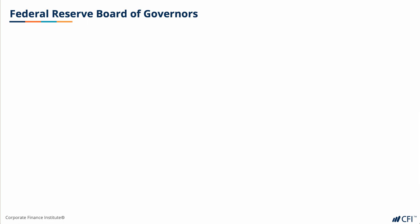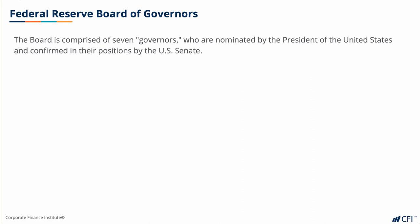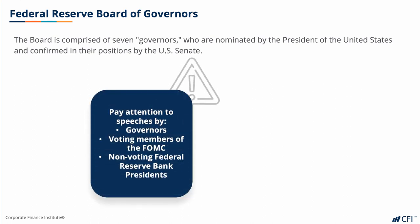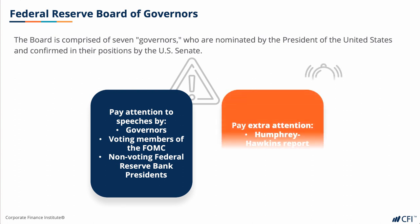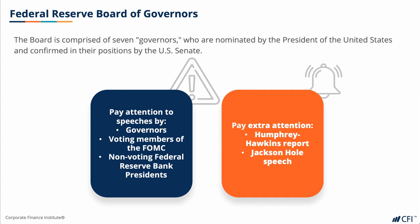Let's look at the Federal Reserve Board of Governors. This board is comprised of seven members, or governors, who are nominated by the President and confirmed in their position by the US Senate. The market pays attention to speeches by all governors, as well as the voting members of the Federal Open Market Committee and non-voting Federal Reserve Bank presidents, in order to get a read on the future direction of the Fed. Key events to pay extra attention to are the Chair of the Federal Reserve's Semiannual Monetary Policy Report to Congress, known as the Humphrey Hawkins Report, as well as the annual speech at the Jackson Hole Fed Symposium, also by the Chair.